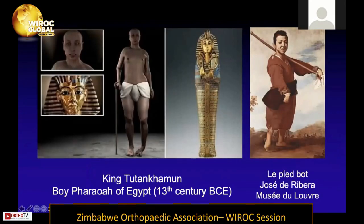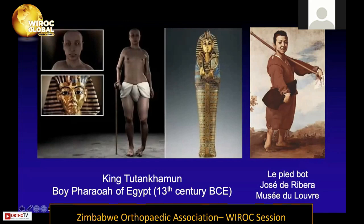To briefly give you an overview, clubfoot is not a new condition. King Tutankhamun from Egypt in the 13th century BC was diagnosed with a clubfoot. From computer modeling made digitally from his mummy, you can see he has a visible clubfoot and also a scoliosis.